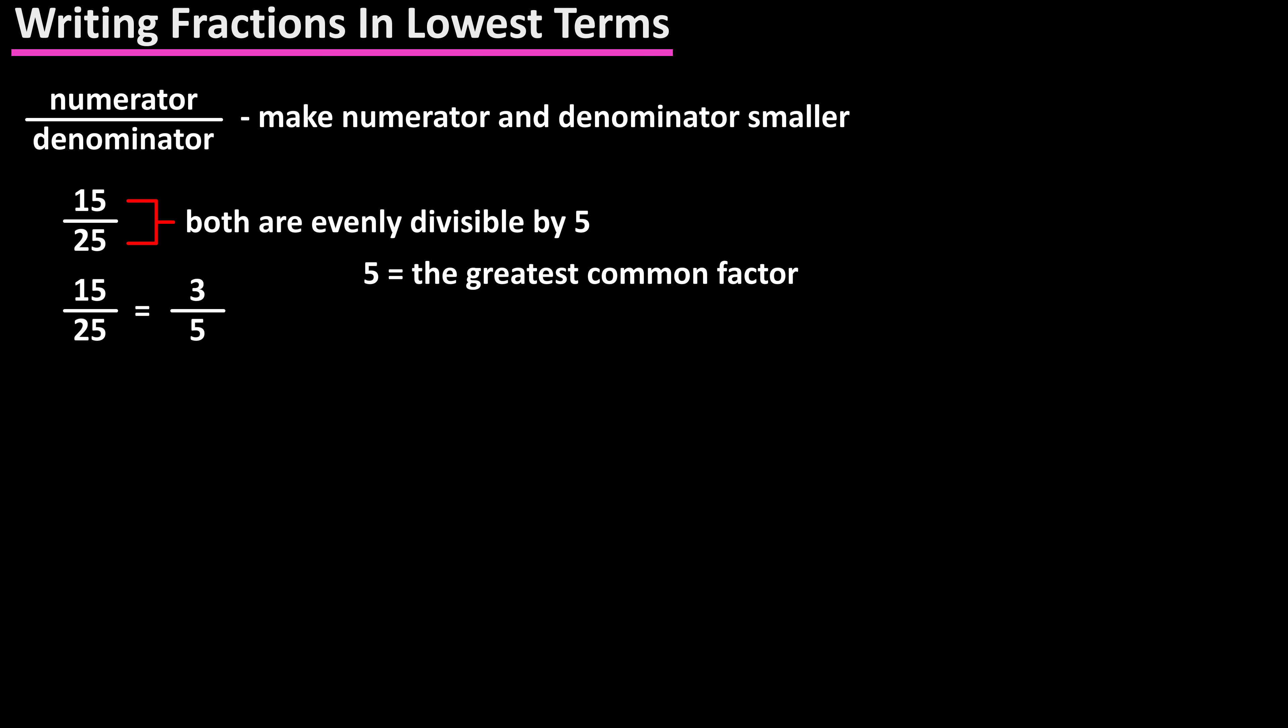To reduce or write a fraction in lowest terms basically means to make the numerator and denominator smaller. For instance, 15 over 25 can be reduced to 3 over 5 because both the numerator and the denominator are divisible by 5, and this number 5 is called the greatest common factor.